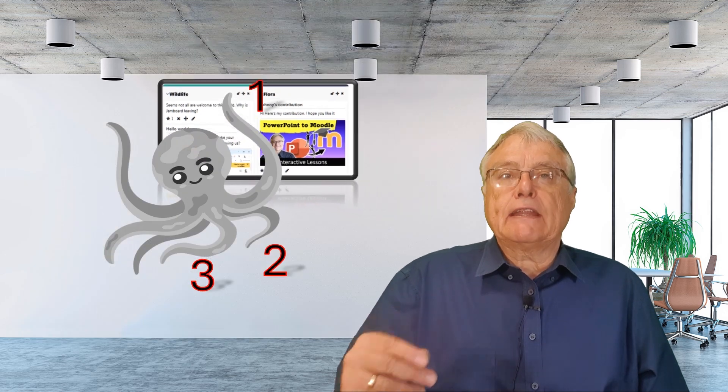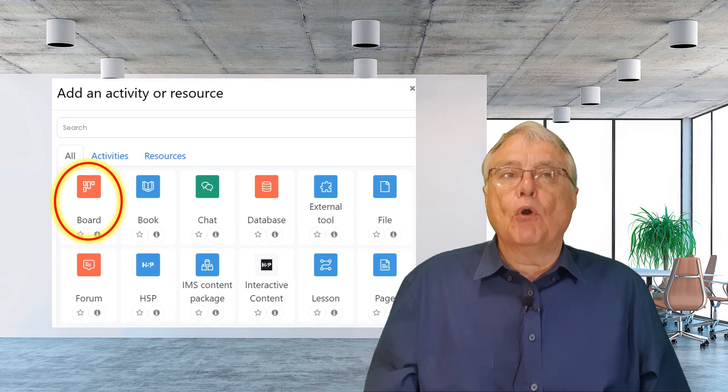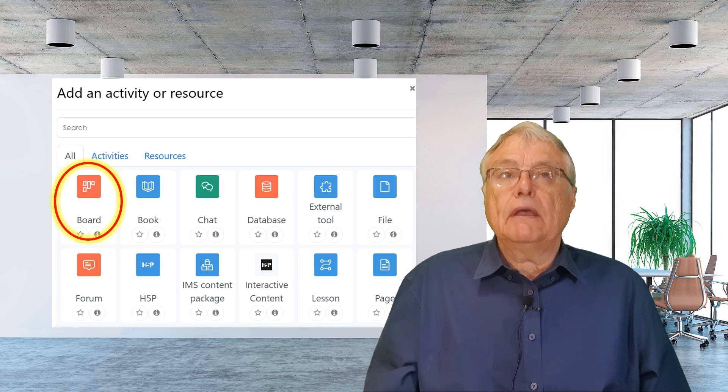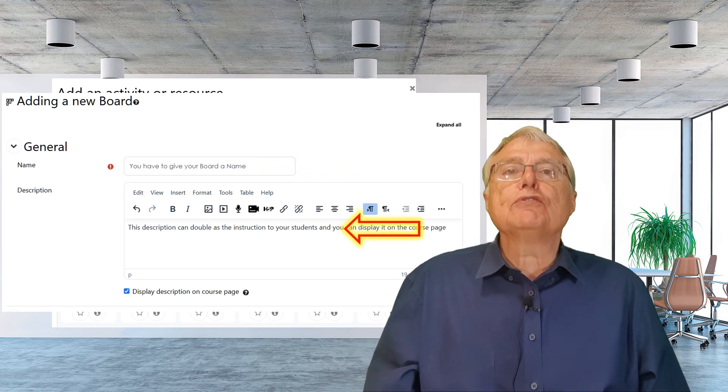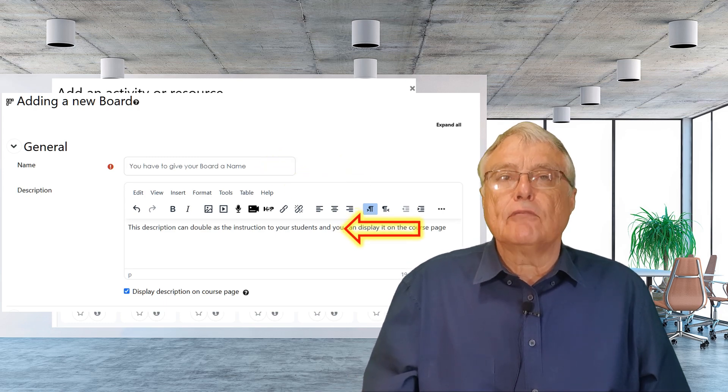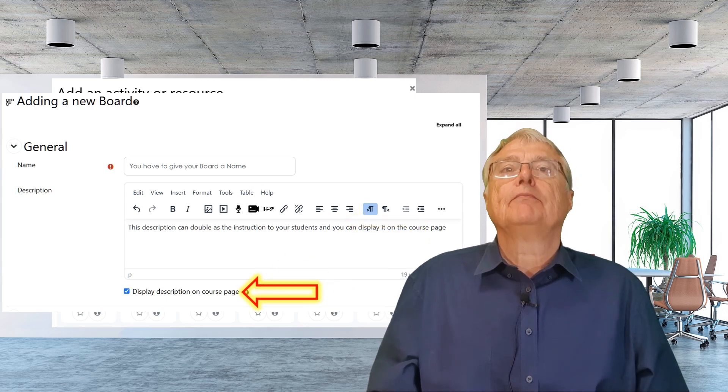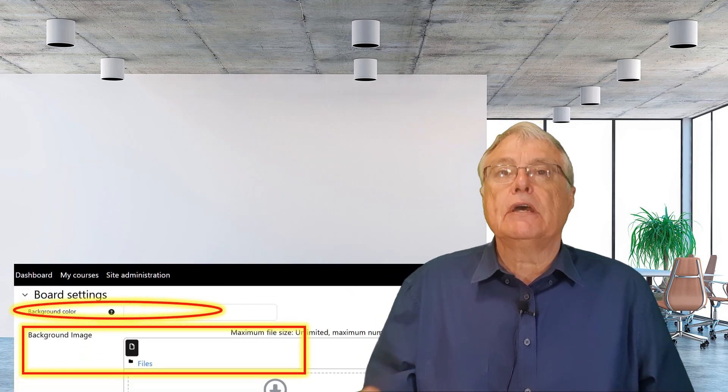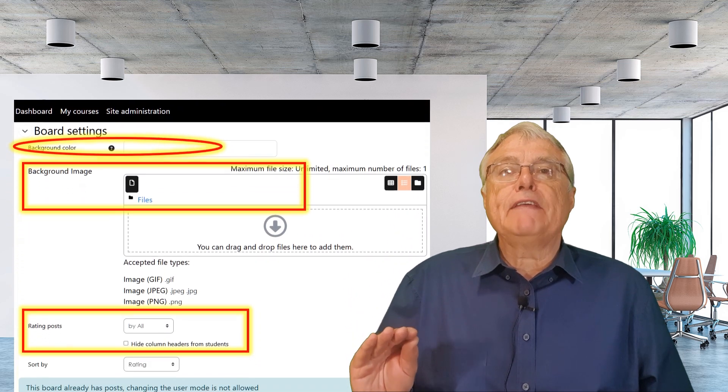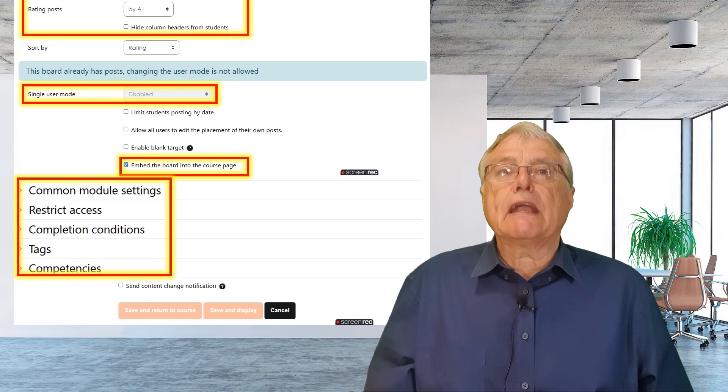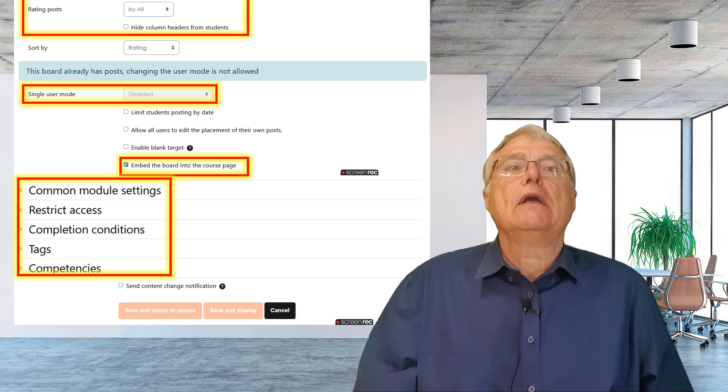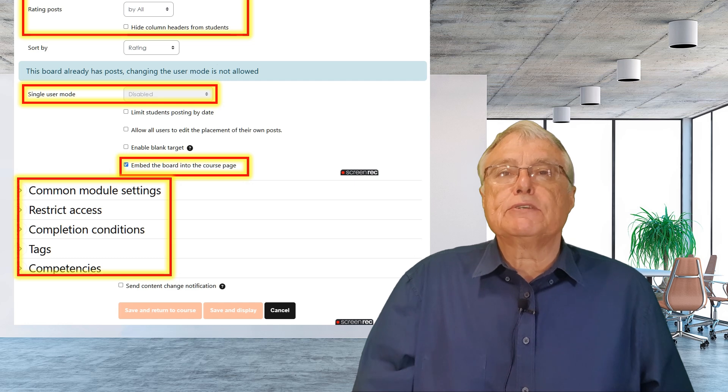To set up the Board activity, go to Activities and Resources and select Board. Start by giving your board a name and a description; this can double as your instructions to the students. You can also choose whether to display this information on the course page or not. Next, customize the look of your board by selecting a background color and image. You can decide if students or teachers should have the ability to write posts. I've disabled the single user mode to encourage interaction amongst students.